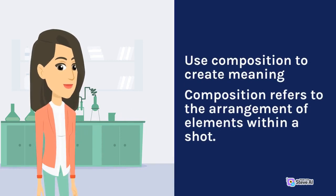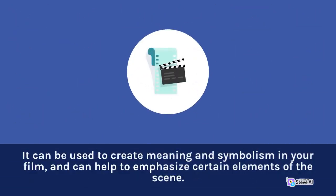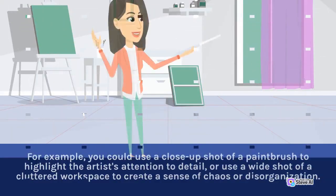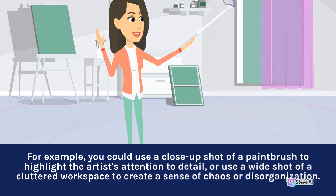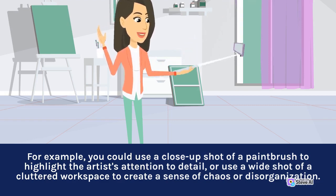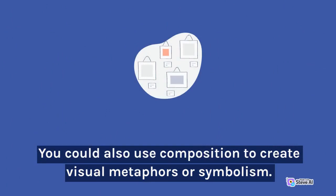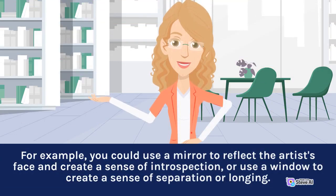Use composition to create meaning. Composition refers to the arrangement of elements within a shot. It can be used to create meaning and symbolism in your film, and can help to emphasize certain elements of the scene. When creating a film about an artist's life, you may want to use composition to highlight the artist's work or to create a sense of contrast between their work and their environment. For example, you could use a close-up shot of a paintbrush to highlight the artist's attention to detail, or use a wide shot of a cluttered workspace to create a sense of chaos or disorganization. You could also use composition to create visual metaphors — for example, a mirror to reflect the artist's face and create a sense of introspection, or a window to create a sense of separation or longing.